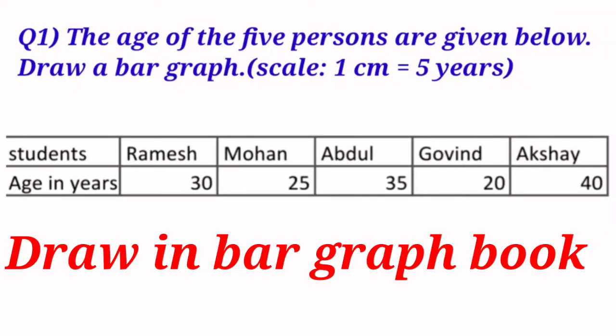Question number 1 is given. The age of the 5 persons are given below. Draw a bar graph. Scale is given 1 cm equal to 5 years.